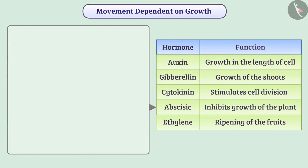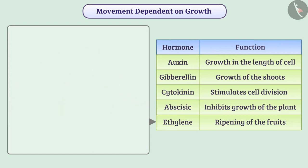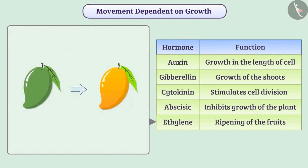However, abscisic acid inhibits the growth of the plant or plant part. For example, abscisic acid causes leaves to turn yellow from green, resulting in wilting. The hormone ethylene, a gaseous hormone, causes the ripening of fruits. In this way, various plant hormones help the plant to grow, develop, and control and coordinate responses to various environmental stimuli.